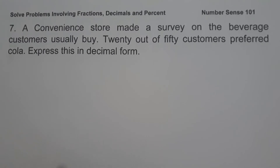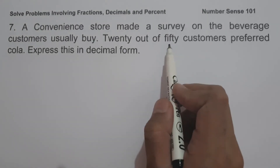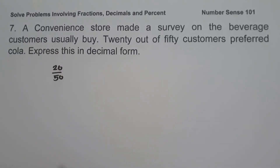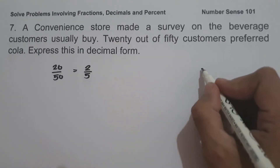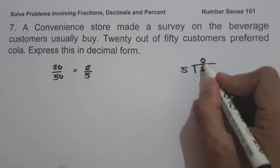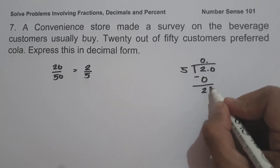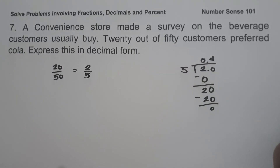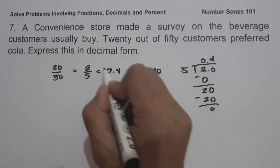On example number 7, a convenience store made a survey on beverages customers usually buy; 20 out of 50 customers preferred cola. Express this in decimal form. Since we have 20 out of 50, we write the fraction as 20 over 50. Since they are divisible by 10, the simplest form is 2 over 5. Dividing 2 by 5: 20 divided by 5 is 4, and 4 times 5 is 20, remainder 0. So 2 over 5 in decimal is 0.4, and this will be our answer.